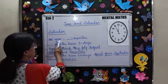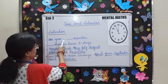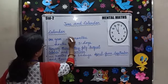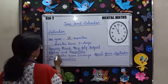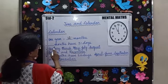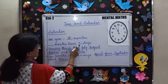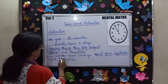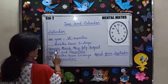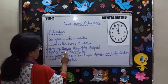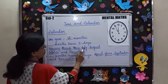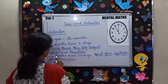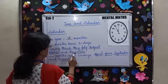1 year has 12 months. Some months have 31 days. How many months have 31 days? Let's see: January, March, May, July, August, October and December.